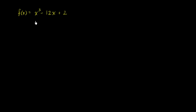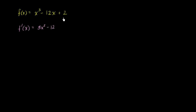To determine the critical points, we have to find the derivative of our function, because our critical points are just the points at which our derivative is either equal to 0 or undefined. The derivative of this, using the power rule several times, gives us: the derivative of x cubed is 3x squared, the derivative of negative 12x is negative 12, and the derivative of a constant is just 0.